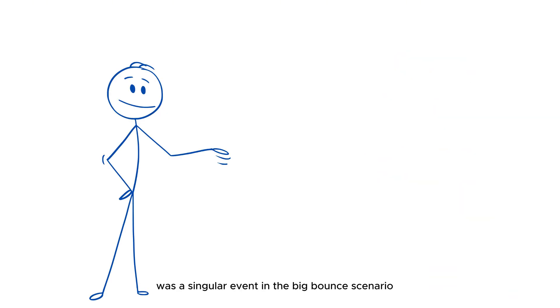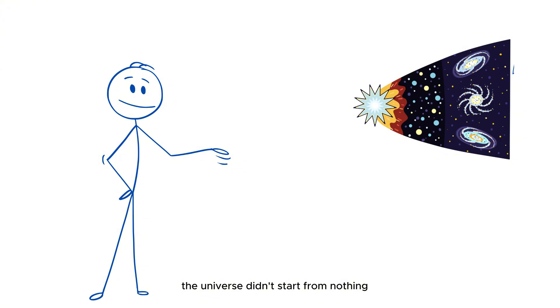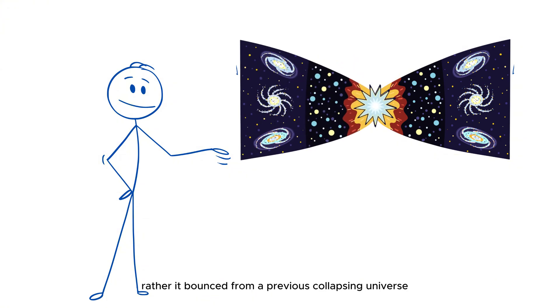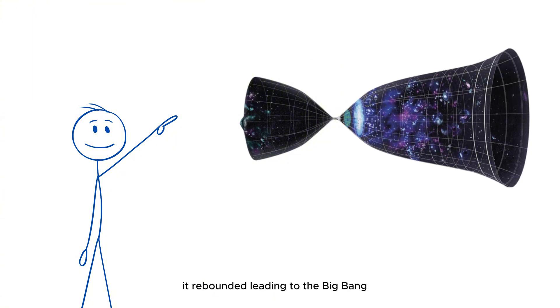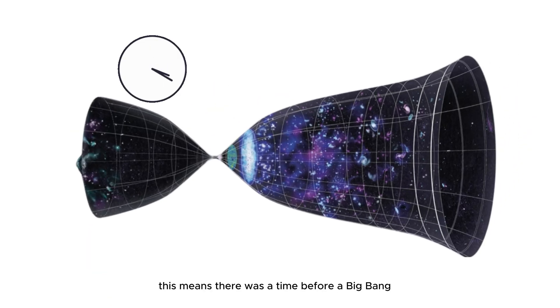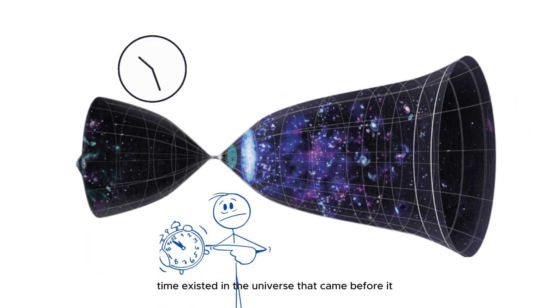In the Big Bounce scenario, the universe didn't start from nothing. Rather, it bounced from a previous collapsing universe. In this model, as the universe from a previous cycle reached a point of extreme contraction, it rebounded, leading to the Big Bang. This means there was a time before our Big Bang. Time existed in the universe that came before it.